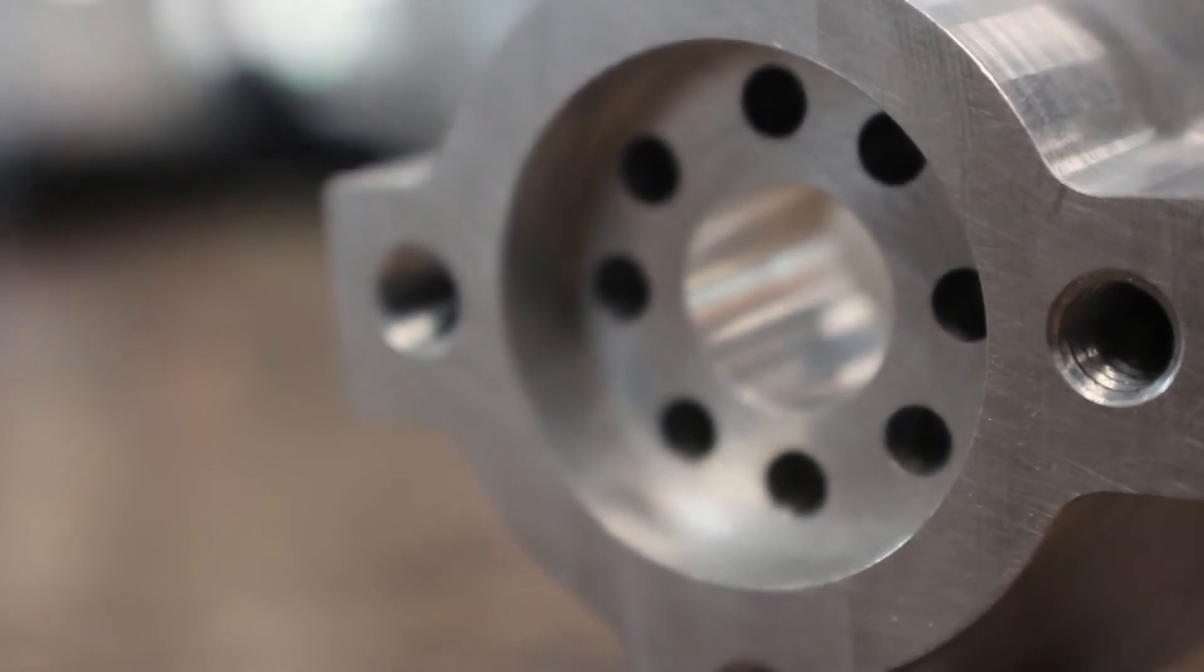One of the most preventable problems we see with parts that come into our inspection department is thread depth. This is when a thread is not fully engaged to the depth in a drawing.